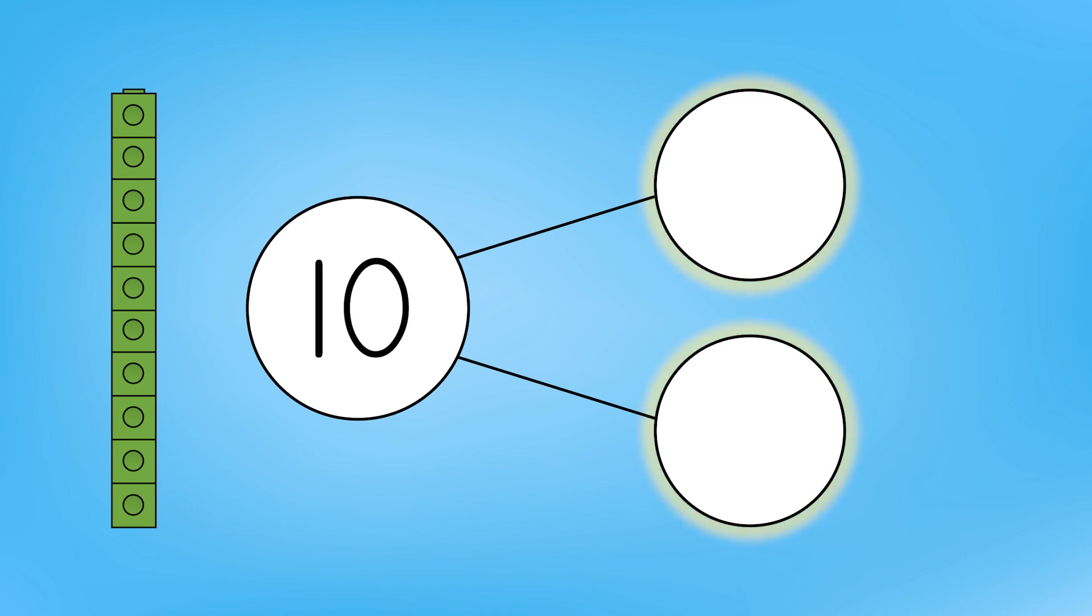What do you think these circles are for? If you guessed parts, you're right! These two circles are for the parts of the whole. When we split my tower, or the whole, into two parts, we ended up with one part made of 6 cubes and one part made up of 4. When we put together our parts 6 and 4, we got our whole 10.